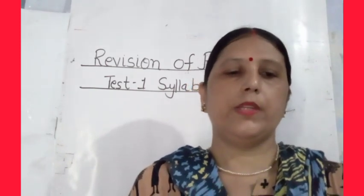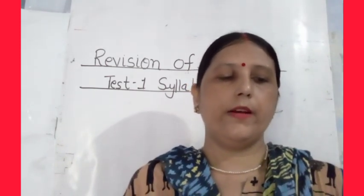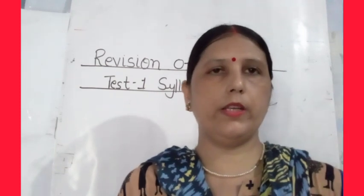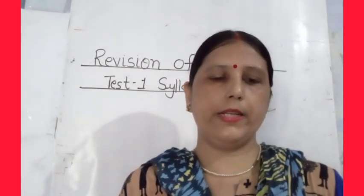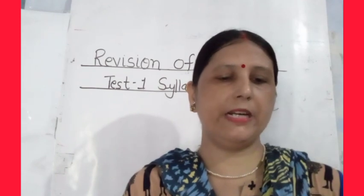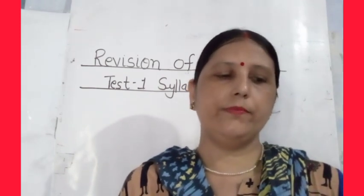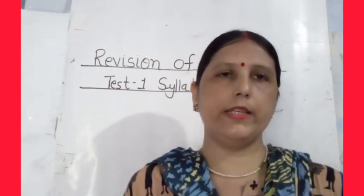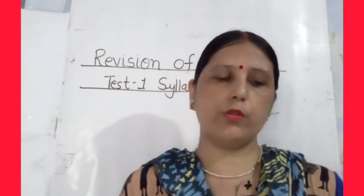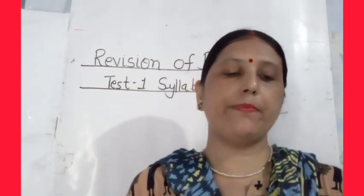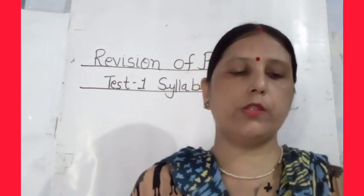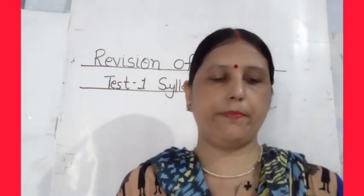First, English Literature. Chapter 1 is The Three Little Pigs — it is your pen paper test chapter. Chapter 2 is Snow White — it is your subject enrichment chapter. I have also explained this chapter. Chapter 3 is The Band Poem — it is also your pen paper test chapter.